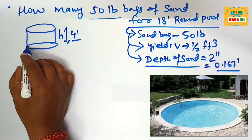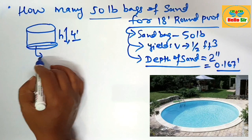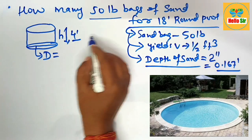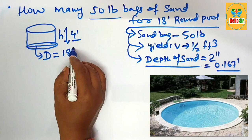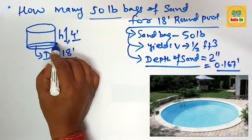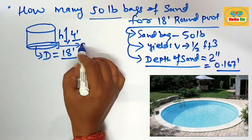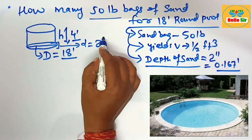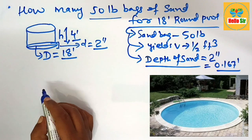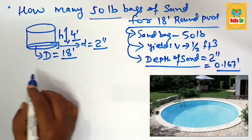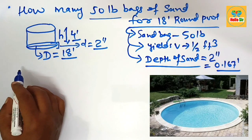This is the diameter of the pool, which is about 18 feet, and the depth of sand required is 2 inches for leveling the base of the swimming pool. How much sand is required?